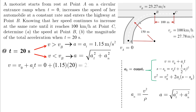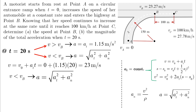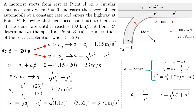Solving for V after 20 seconds using the first kinematic equation, with V_0 equal to zero and A_t equal to 1.15 meters per second squared, the velocity is 23 meters per second. Since 23 m/s is less than V_B of 23.27 m/s, the car is still within the curve. Therefore we must use the total acceleration equation: A_n equals V squared over rho, and the total acceleration equals the square root of A_t squared plus A_n squared, giving a total acceleration of 3.71 meters per second squared.